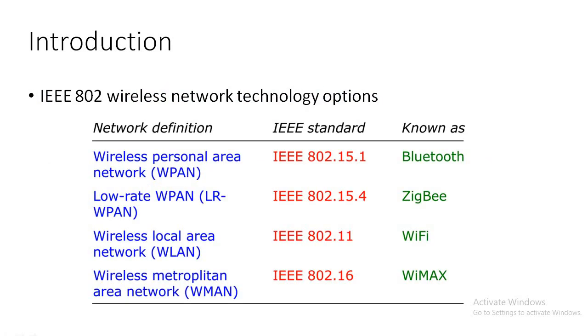Some of the IEEE 802 wireless network technology options are given below, defining the network definition, the IEEE standards, and the LAN technology that we are using.